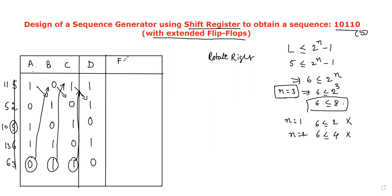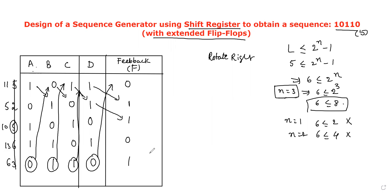Now write the feedback output. The same rotate-right-shift procedure is applied — the same value is placed here and this one moves to this place. Therefore: one, zero, one, zero, one. Similarly, zero is written here as well. Once this feedback output is written, draw the K-map to simplify and get the simplified expression.